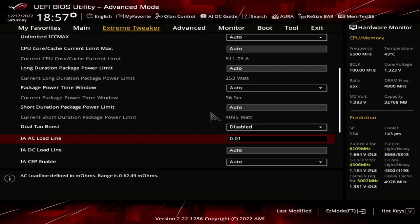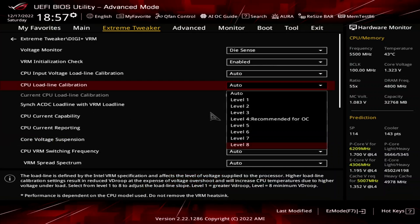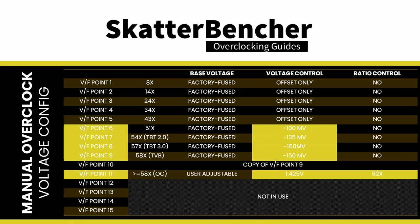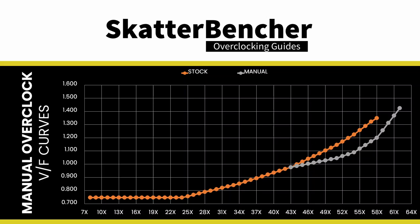I opted for what some may call a purist approach — wanting the actual voltage at the CPU die to closely match the configured voltage frequency curve — so I used an AC loadline of 0.01 and a VRM loadline of level 8. Note that generally I do not recommend using VRM loadline level 8. As for the VF points, I substantially undervolted VF points 6 to 9 to achieve lower voltage in all-core workloads, achieving a nice boost in all-core load frequency. In Prime95 small FFTs with AVX disabled, the average P-core frequency increased from 5,500 MHz to 5,752 MHz. For the maximum boost frequency of 6.2 GHz, I set an adaptive voltage of 1.425 V.